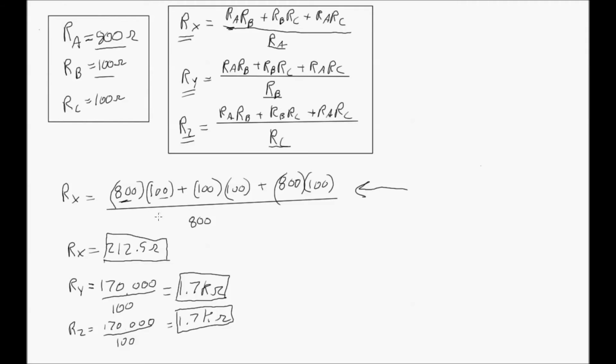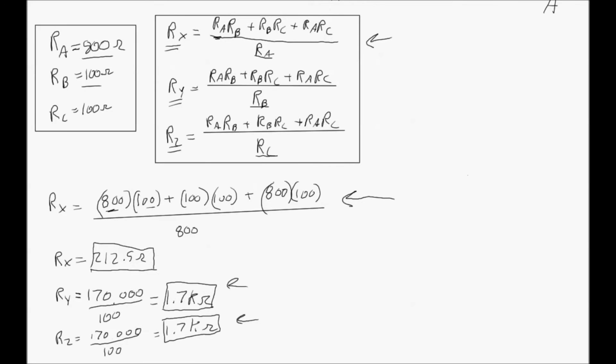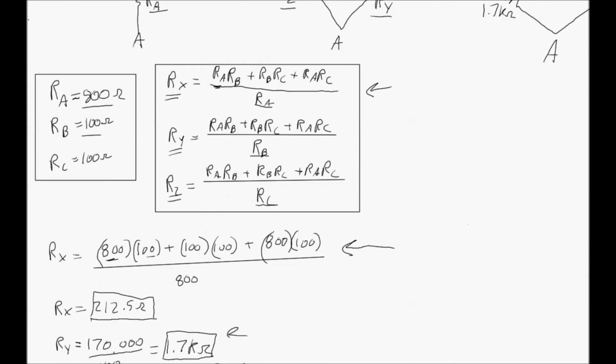Our final answer for RX is 212.5 ohms. And I didn't show all the work, but using that same formula, the formulas here, we get answers 1.7 kilohms for our RY, and 1.7 kilohms for our RZ. Now that we've solved the RX, RY, and RZ equivalent resistors, we can plug them back into the circuit and see how that helped us.